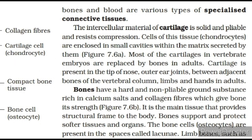Cartilage, bones and blood are various types of specialized connective tissues. The intercellular material of cartilage is solid and pliable and resists compression. Cells of this tissue, chondrocytes, are enclosed in small cavities within the matrix secreted by them. Most cartilages in vertebrate embryos are replaced by bones in adults. Cartilage is present in the tip of the nose, outer ear joints, between adjacent bones of the vertebral column, limbs and hands in adults. Bones have a hard and non-pliable ground substance rich in calcium salts and collagen fibers which give bone its strength. The bone cells, osteocytes, are present in spaces called lacunae.